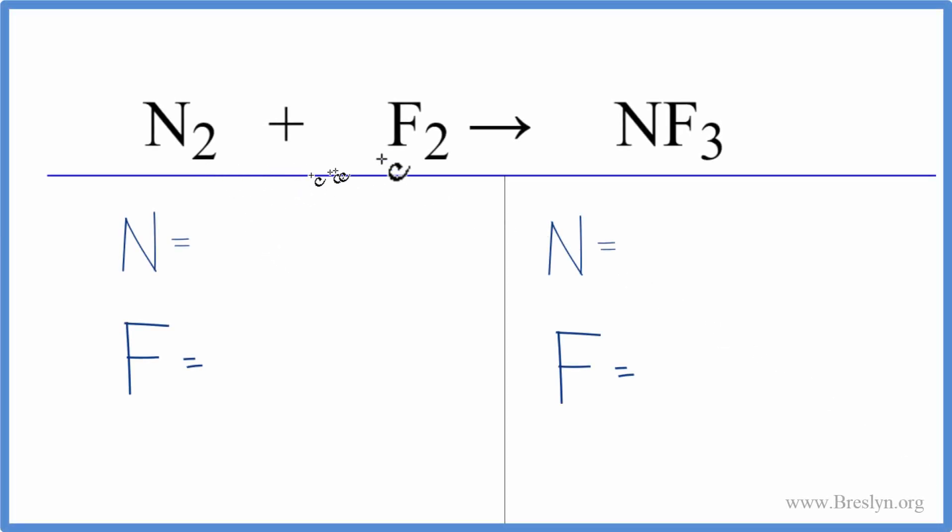To balance this equation, N2 plus F2 gives us NF3, that's nitrogen gas and fluorine gas. Let's count the atoms up on each side of the equation. We have two nitrogen atoms and we have two fluorine atoms.